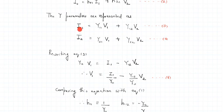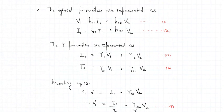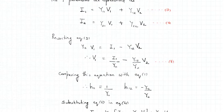Rearranging equation 3: Y11·V1 = I1 − Y12·V2. Moving Y11 to the right-hand side gives V1 = I1/Y11 − (Y12/Y11)·V2. We can directly compare this equation 5 with equation 1, where V1 is related to I1 and V2. The term associated with I1 becomes H11 and the term associated with V2 becomes H12. Therefore, H11 = 1/Y11 and H12 = −Y12/Y11. We have obtained two H parameters using equation 3.